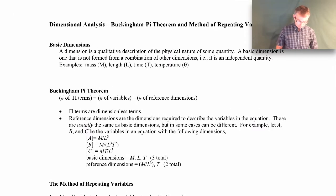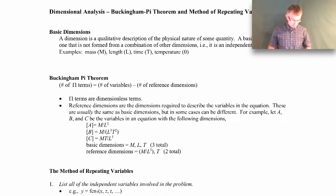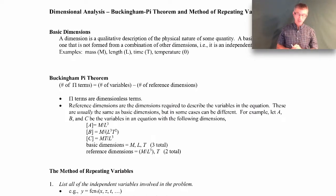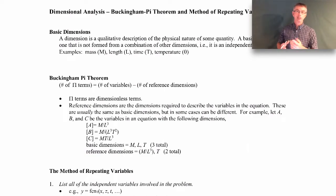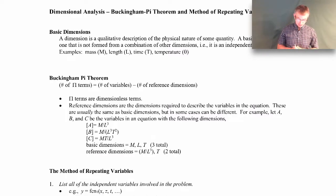Let's get into the mechanics of how you do a dimensional analysis. We'll start with some basics. The very first thing is basic dimensions. Dimensions are things like mass, length, time, and temperature. They're different from units — units give some quantity to the dimensions. A dimension is a physical quantity like mass; a unit gives a size to that mass, like one kilogram or one slug. We're going to focus on dimensions here rather than units.